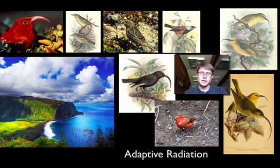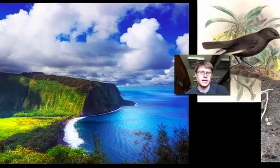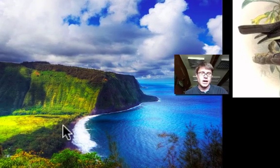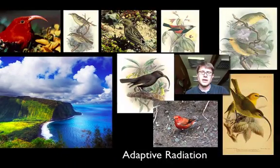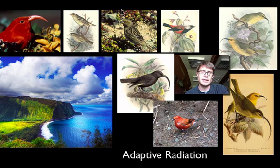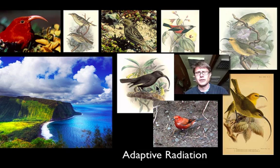Taken to its extreme, this kind of speciation is called adaptive radiation. When a new environment opens up with no predators, you get a huge amount of diversity. The Hawaiian honeycreeper is a great example — we think the ancestor was a finch-like bird, but once it arrived on the islands as a founding population, it diversified into a huge variety of honeycreepers with beaks each adapted to different flowers, exploiting all the available niches.